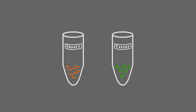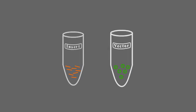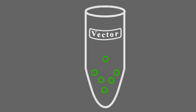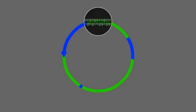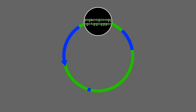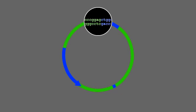Plasmid vector is a circular piece of DNA that could be easily amplified in E. coli, stored for long periods of time, and easily manipulated in a test tube.